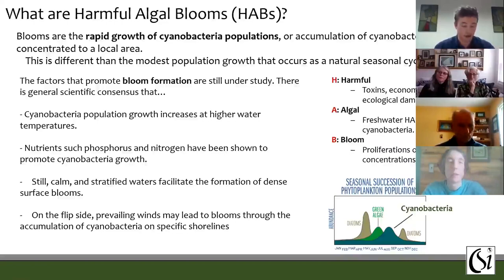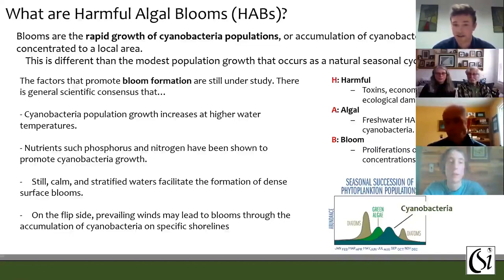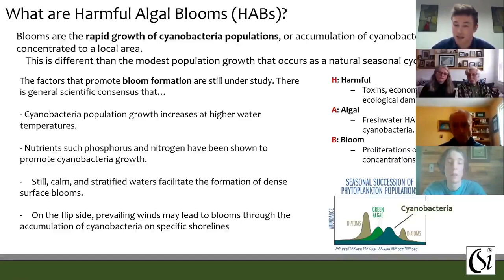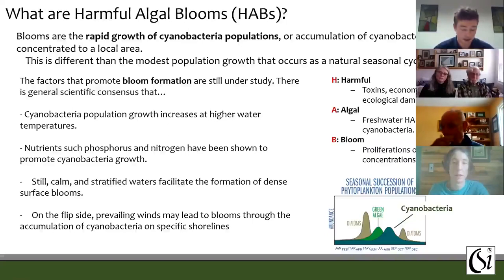These blooms are called harmful because cyanobacteria can produce toxins that can be present at high concentrations during dense accumulations. They're also called harmful because they can damage the local economy by disrupting tourism and recreation, and because they can cause ecological damage and disruption. This rapid growth is different from the modest growth that occurs as part of a natural seasonal cycle. A simplified chart shows the natural seasonal succession of phytoplankton populations — the population of cyanobacteria in a lake naturally tends to increase around the summer months, but still far lower than the spike in population that results in what we call a harmful algal bloom.